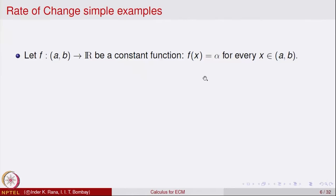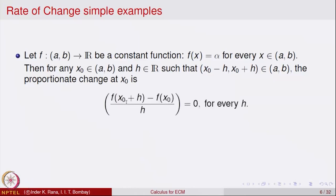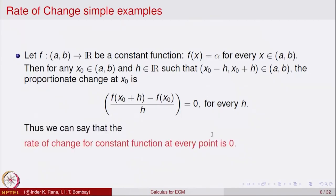What is the change in a constant function? There is no change because at every point the value is α. At any point x₀, looking at the interval from x₀ minus h to x₀ plus h inside (a, b), the proportionate change is f of x₀ plus h minus f of x₀ divided by h — the change in the value of the function divided by the change in x. For this constant function that is 0 for every h, meaning the rate of change of the constant function is 0 at every point.